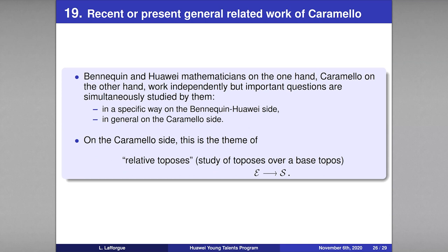Independently from the Huawei people and Daniel Benquin, Caramello is working on general questions very close to what Benquin and Belfiore are working on. For Benquin and Belfiore, this is driven by interest in deep neural networks; for Caramello, it is for the general development of category theory. Her theme is relative toposes — the study of a morphism from one topos to another, rather than considering only one topos but a topos over a base topos.